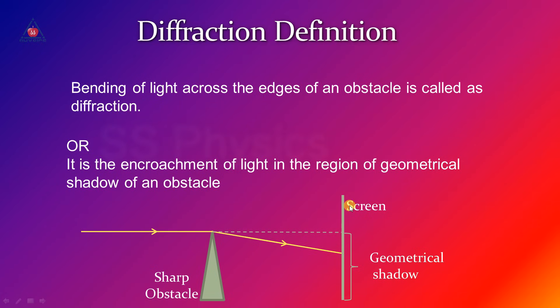So on the screen you will see there is a geometrical shadow, but in the geometrical shadow, light will enter — and that is the encroachment of light in the geometrical shadow.